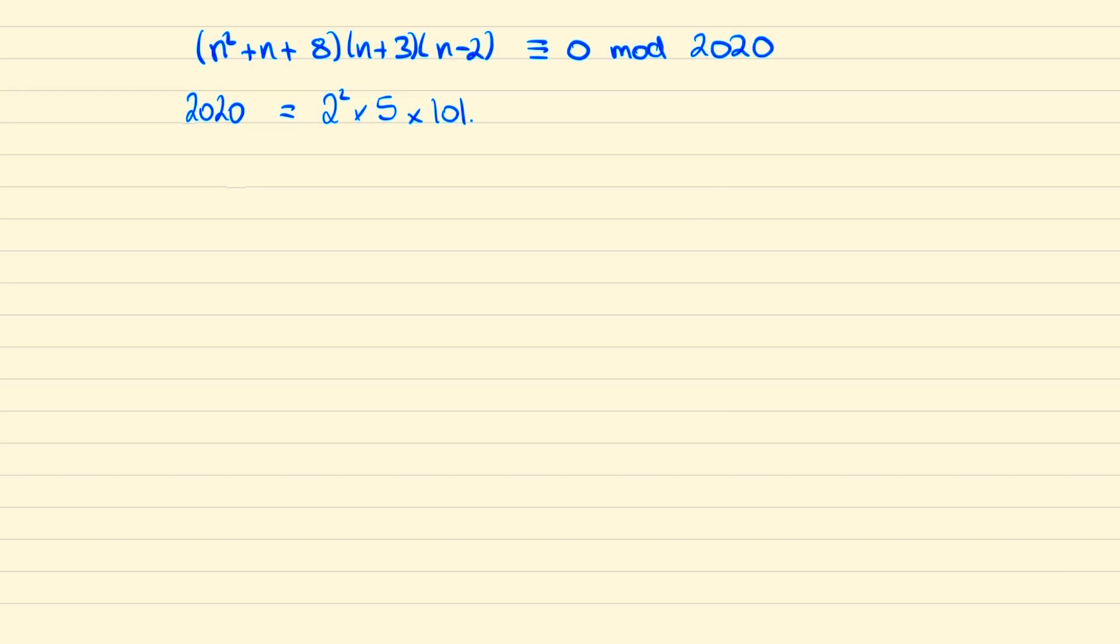And for all positive integers n, n minus 2 is less than n plus 3 which is less than n squared plus n plus 8. Which would mean that if one of these expressions were to be 0 mod 101 then it would follow that n must be at least 98.